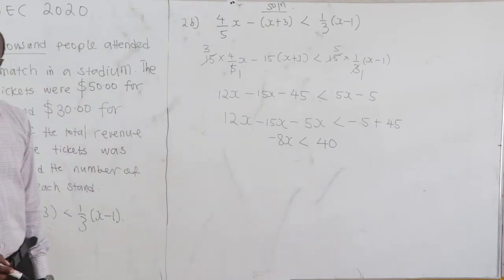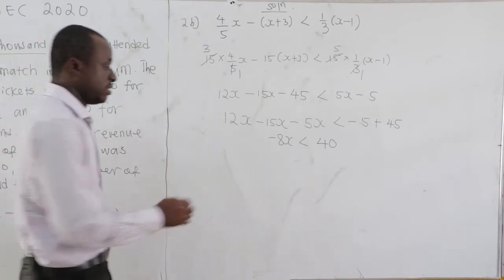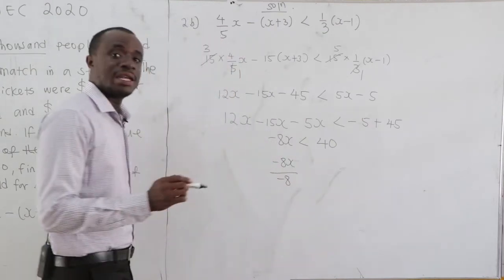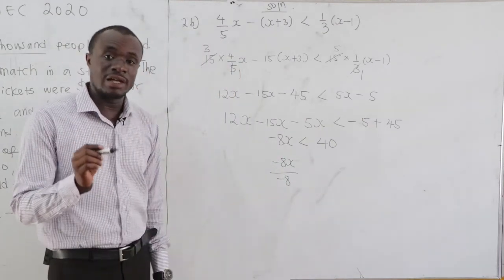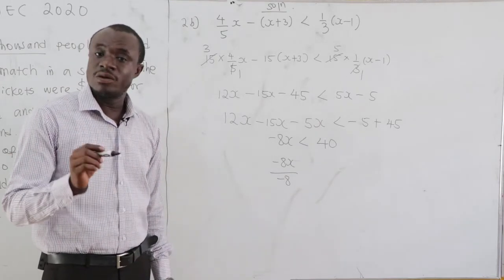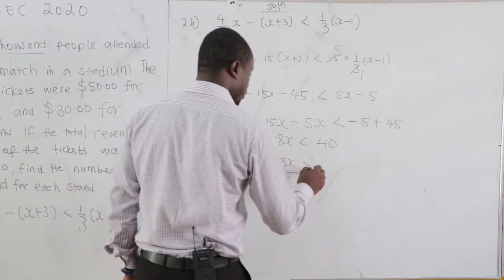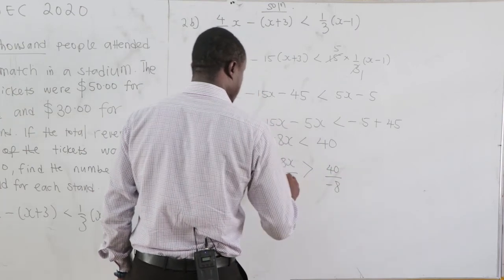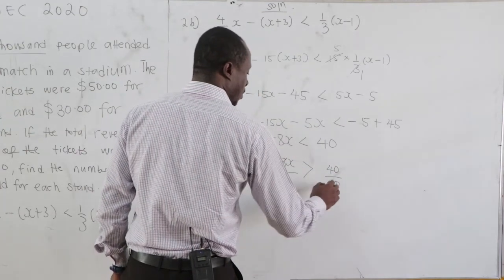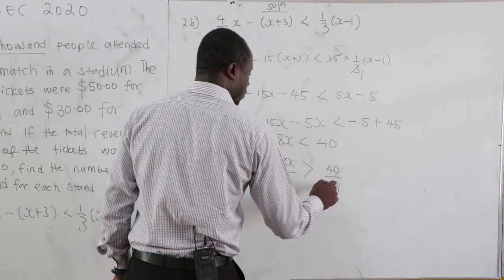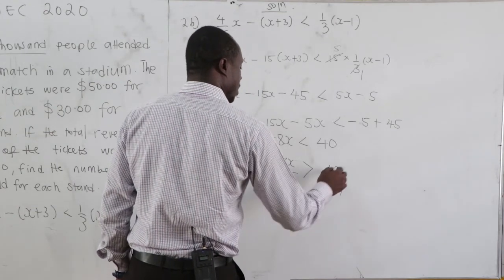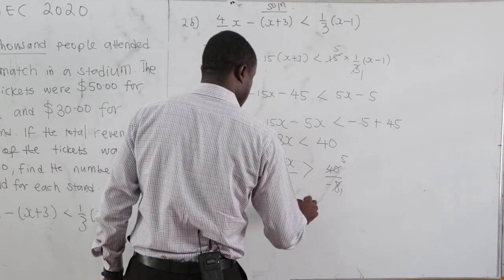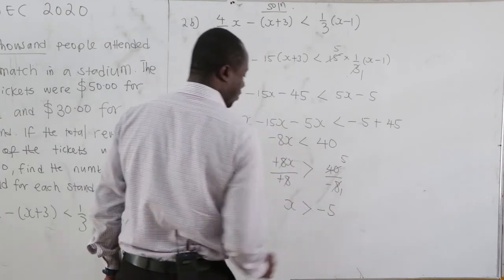Now we divide both sides by negative 8. Anytime we divide an inequality by a negative value, the sign of the inequality changes. So negative 8X over negative 8 becomes X, and the inequality flips to greater than. 40 divided by negative 8 gives negative 5. So X is greater than negative 5.